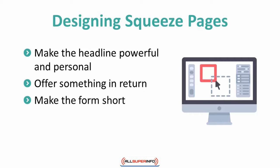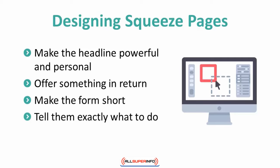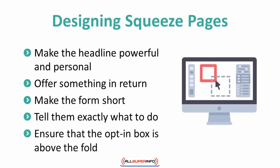If possible, obtaining a first name and an email is all you need to be effective. Do not make your form longer than necessary. 4. Tell them exactly what to do by providing a strong call-to-action button. 5. Ensure that the opt-in box is above the fold, so that users do not have to scroll or search in order to join your list. Keep it simple at all times.